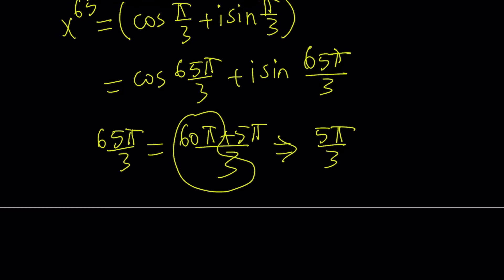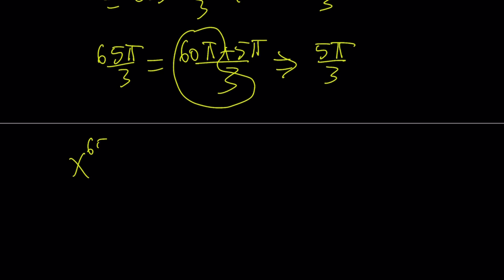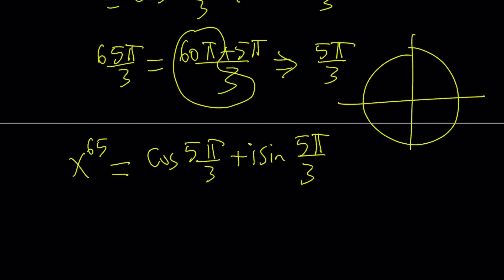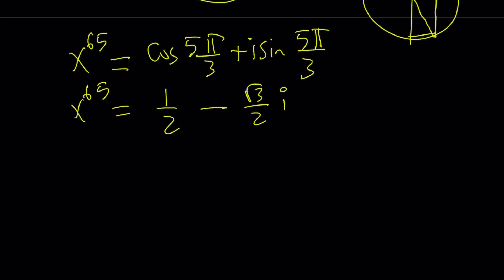So my x to the power 65 becomes then cosine of 5 pi over 3 plus i sine 5 pi over 3. Let's take a look at the trigonometric values of 5 pi over 3, which is the same as 300 degrees. So it's kind of something like this. If you look at the x and the y's, its cosine is going to be 1 half, which is positive, right? But its sine is going to be negative root 3 over 2. So this is x to the 65th. And again, the modulus is 1.